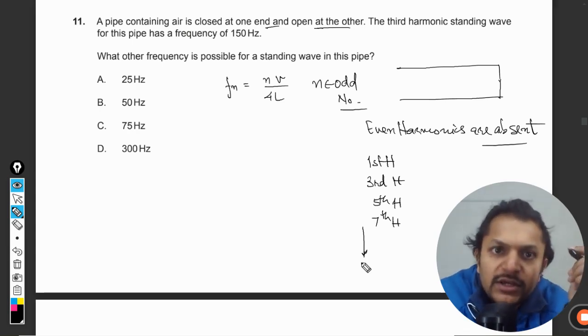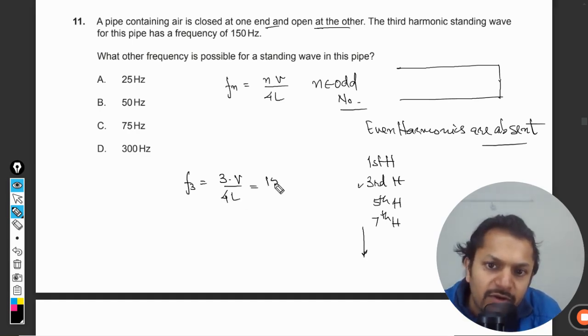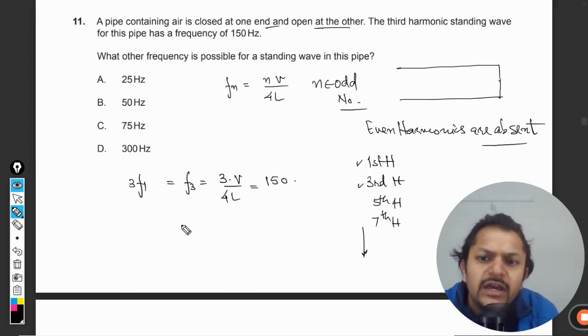It says that the third harmonic, so the frequency f₃, that is 3 times v divided by 4L, this value is equal to 150. So this will be equal to 3 times the fundamental frequency, that is the first frequency. Clearly the first frequency will become 50 hertz.